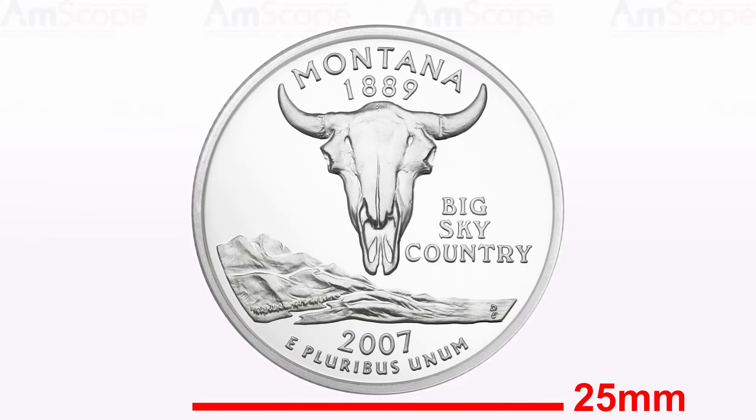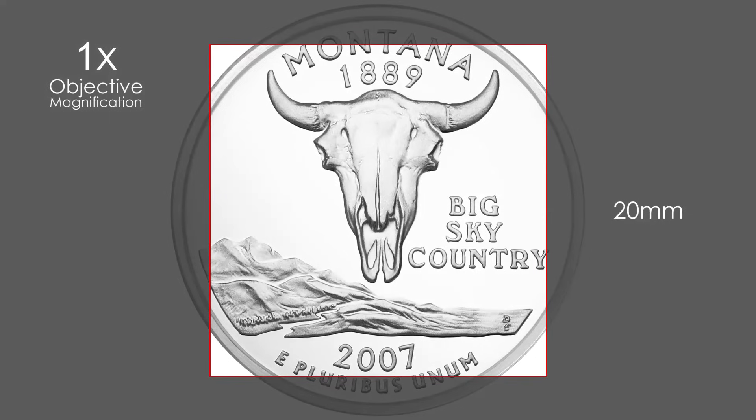This U.S. quarter is about 25 millimeters in diameter. With a field number of 20, at 1x magnification, the field of view is 20 millimeters, which shows most of the coin.